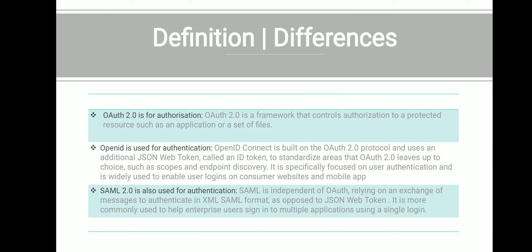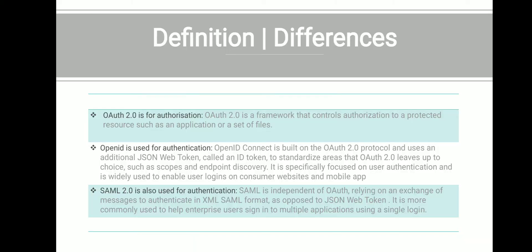OAuth 2 is used for authorization. It is a framework that controls the overall authorization process and it protects resources such as applications or sets of files, and so on.